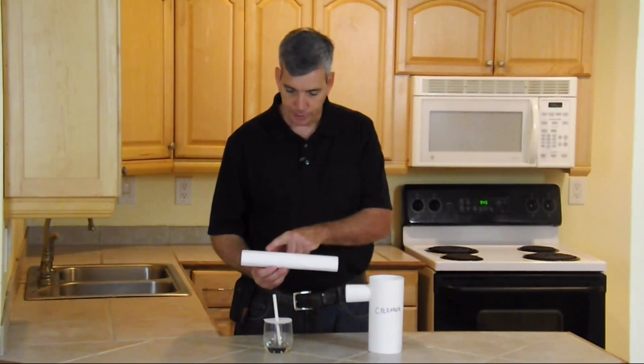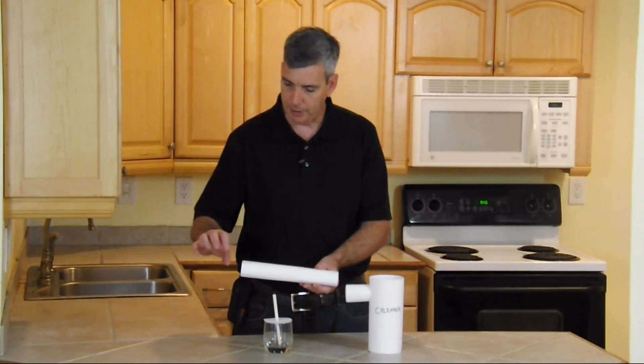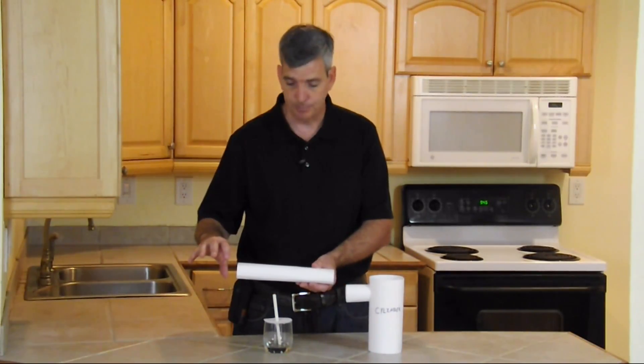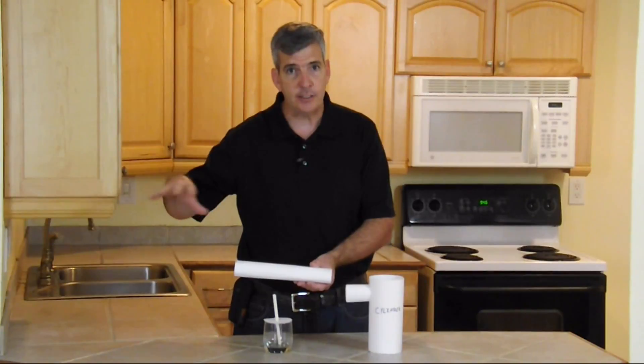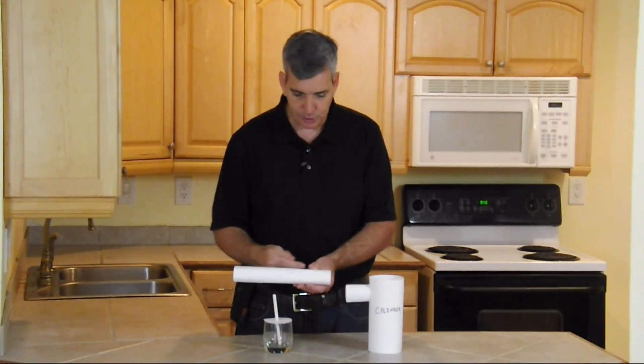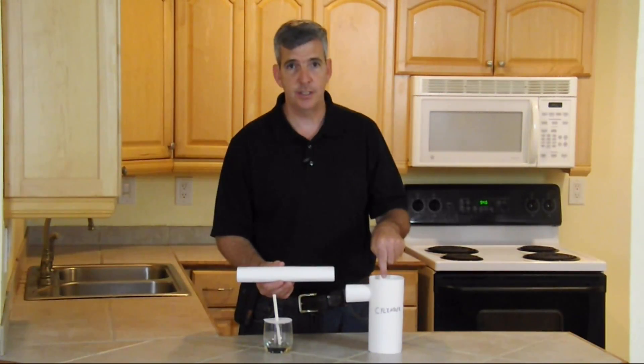This is a carburetor throat. Over here would be an air filter, if you will, allowing air outside of the engine through this tube into this cylinder.